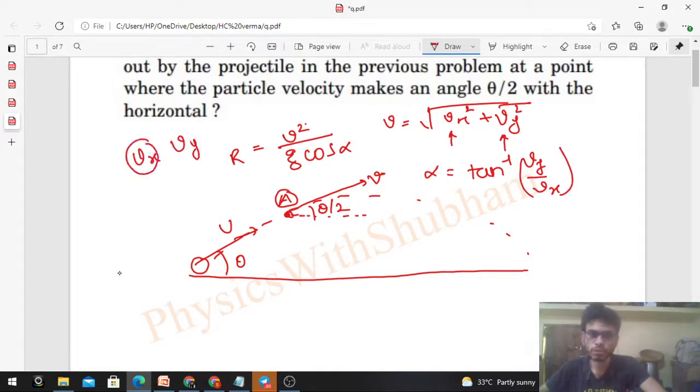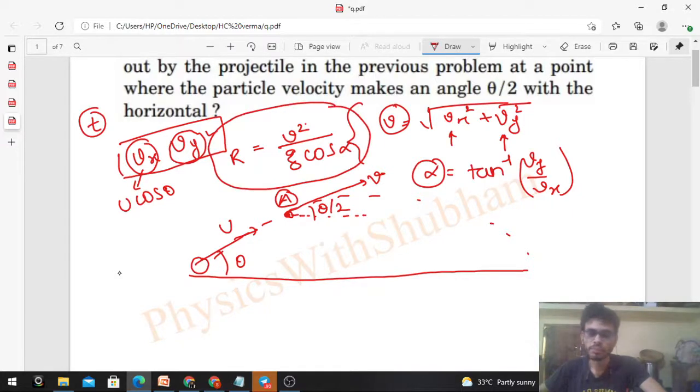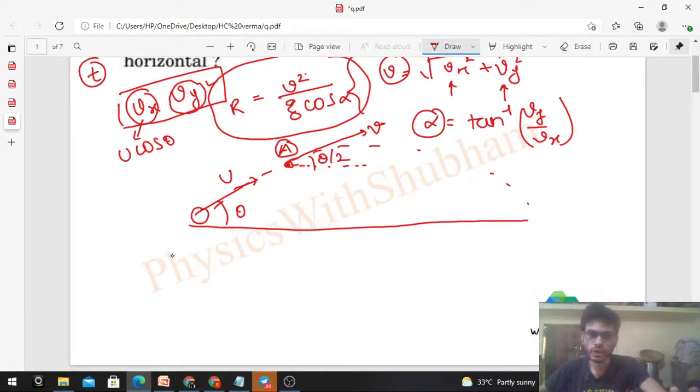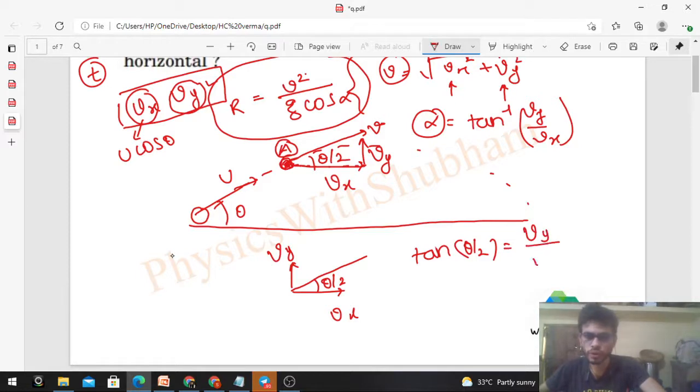If you have vx and vy, and we're asking for the radius of curvature, we need to establish the relationship. What does that mean? vy is equal to vx × tan(θ/2).